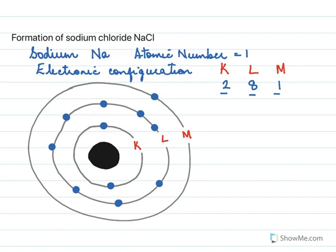The last shell is called the valence shell. Now the valence shell is not satisfied because it has just one electron — it needs to have eight electrons. So what does sodium do? Sodium prefers to give out this one electron and lose the outermost shell.